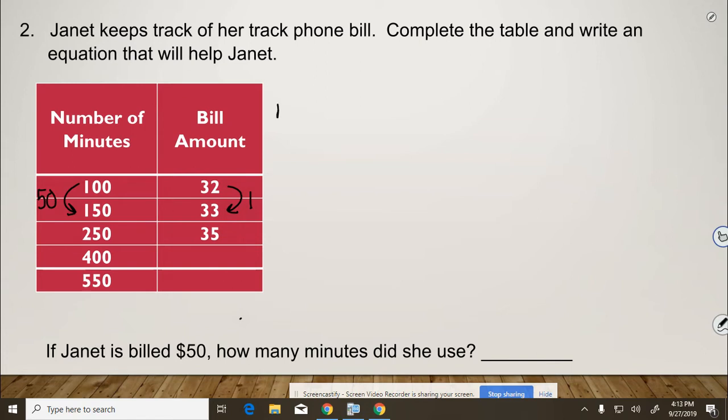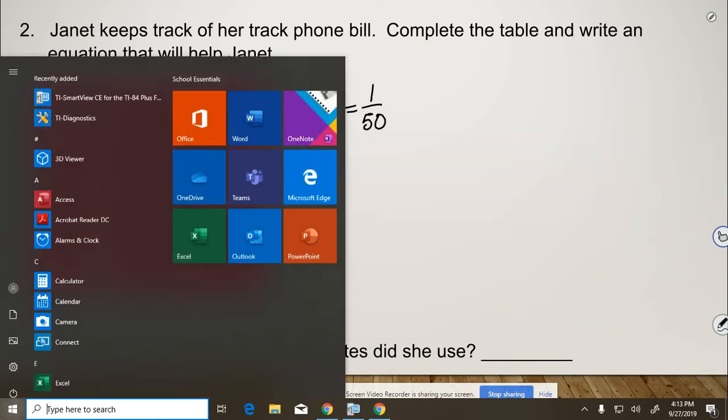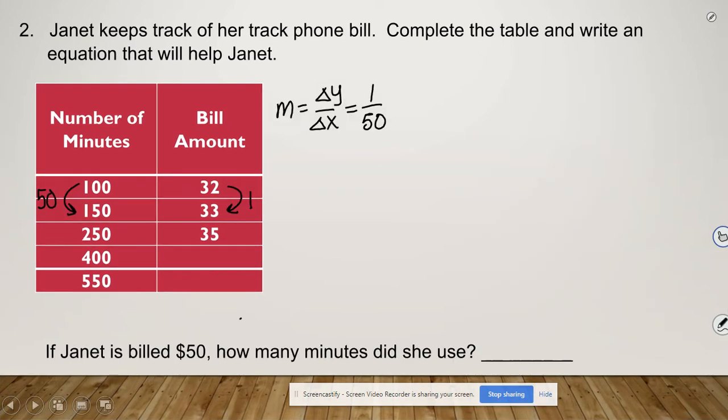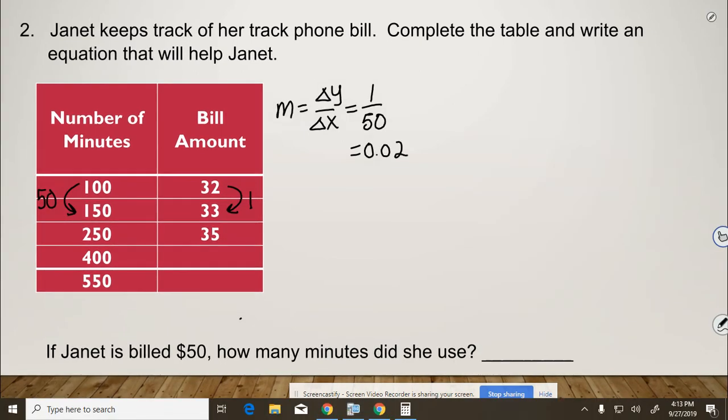So our slope, or change in y over change in x, equals 1 over 50. So I want to change that to a decimal, because we're talking about money here. So we can do 1 divided by 50, and that's 2 cents.